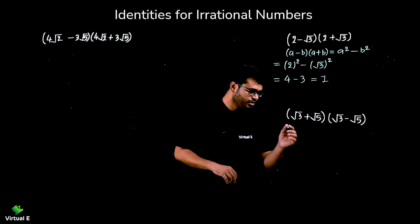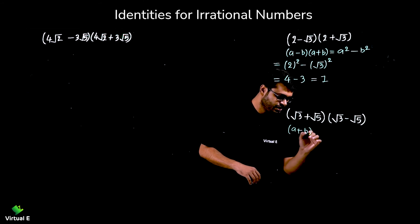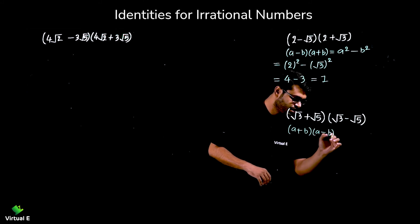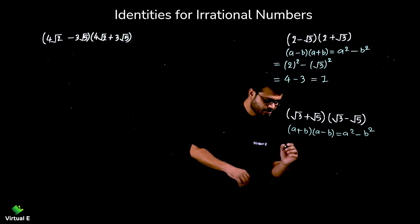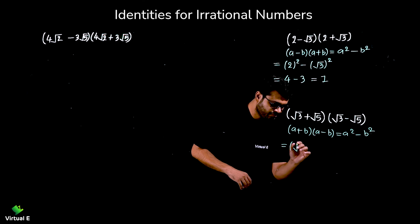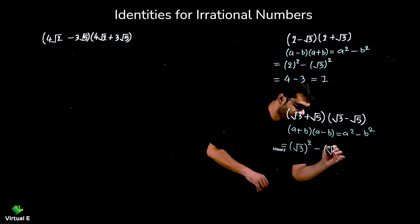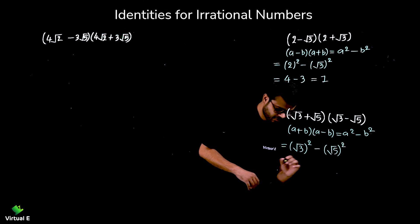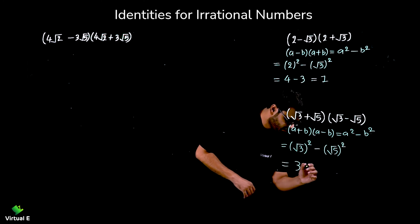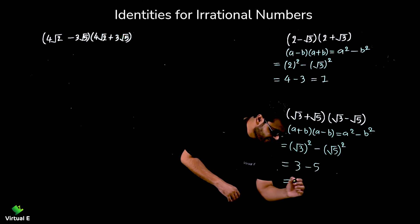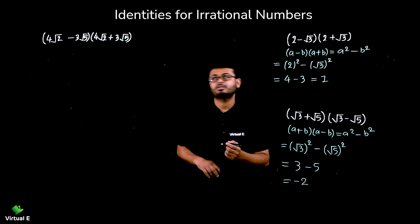Let's discuss one more question using the identity (a + b)(a - b) = a² - b². Here we have (√3 + √5)(√3 - √5), so we take the squares: (√3)² - (√5)² = 3 - 5 = -2. Simple — this is how we solve it.